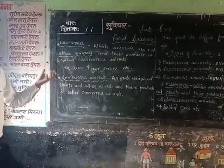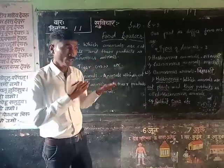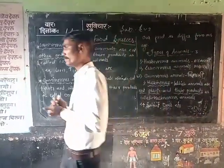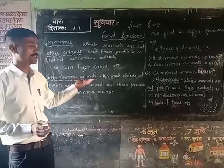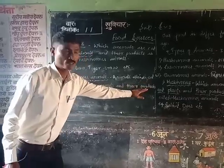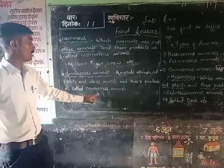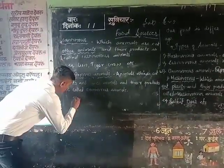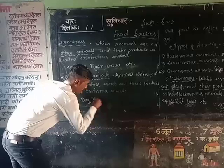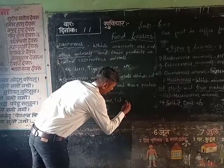Omnivorous animals eat both plants and other animals and their products. So the animals that eat plants and other animals and their products are called omnivorous animals. For example: dog, man, crow, cat, etc.